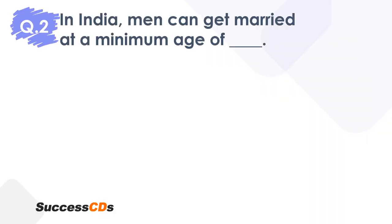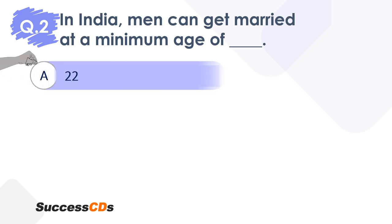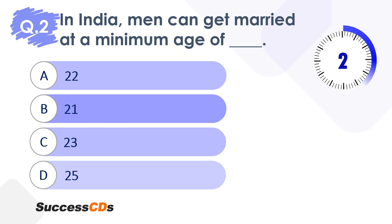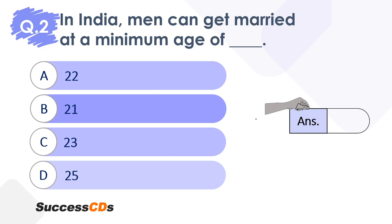Moving to question 2. In India, men can get married at a minimum age of dash. Is it 22, 21, 23, or 25? Time begins now. What is the minimum age for male members to get married in India? Is there a law that restricts the age of marriage for both female and male? The correct answer is option B, which is 21.